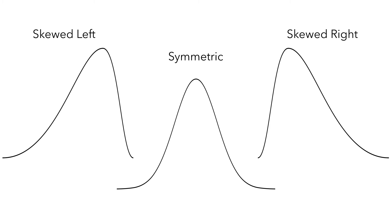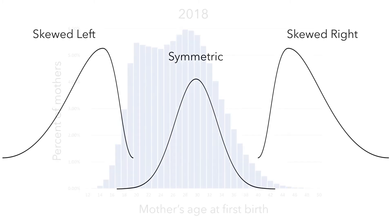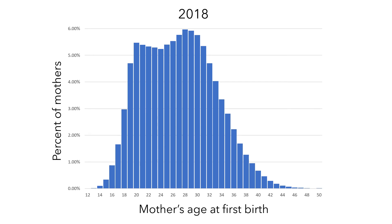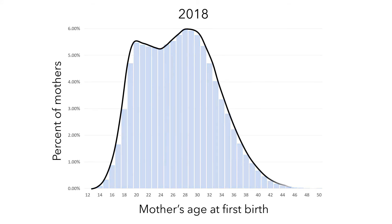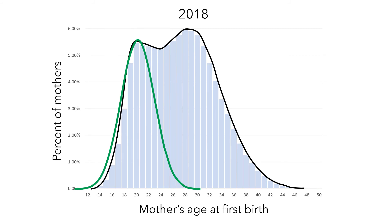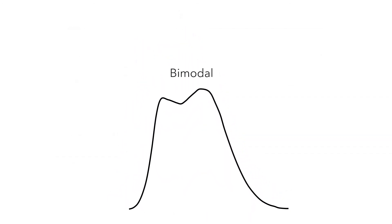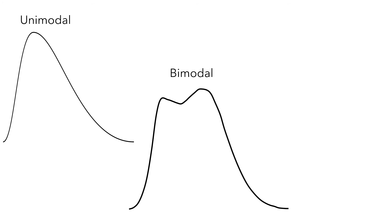There is another aspect of the shape of a distribution that you might not have noticed. Here is the distribution of mothers' ages from 2018. In addition to being slightly skewed to the right, if you look at its overall shape, you'll probably notice that it appears to have two distinct peaks. Each of these peaks is called a mode, and these modes tell us something: there are probably two distinct groups of mothers. The first group tends to have their first child when they are younger, and the second group tends to have their first child when they are a little older. Since this distribution has two modes, it is called bimodal. The distribution for mothers' ages in 1980 had one mode, so it is described as unimodal.